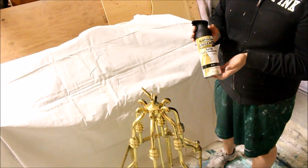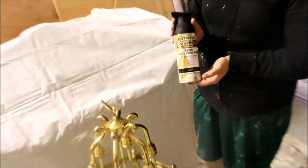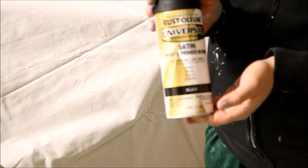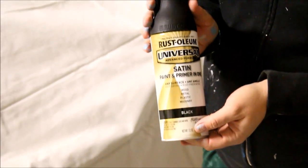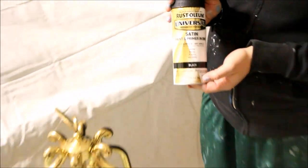The paint that we're going to be using today is Rust-Oleum Universal Advanced Formula. It's a paint primer in one and I'm going with black. This is one of my favorite paints for metal because it sticks really well and you don't have to prime it. You just clean your piece and go. So I'm going to show you how smoothly it goes on.